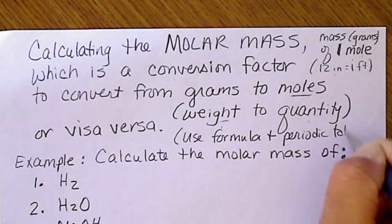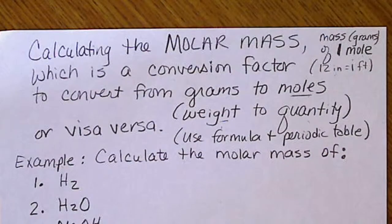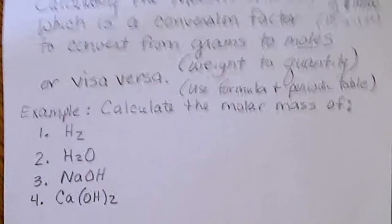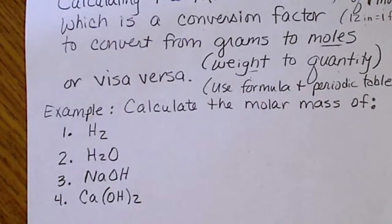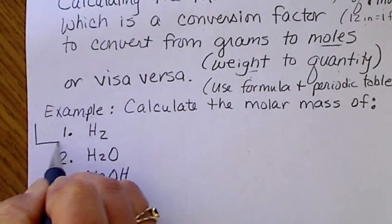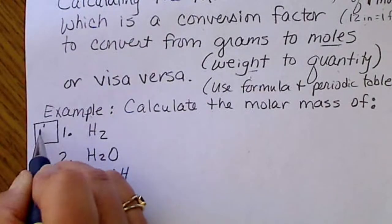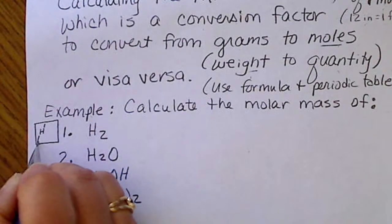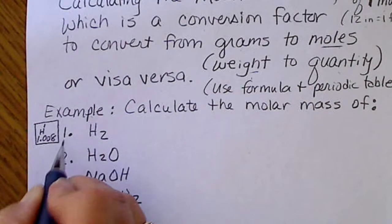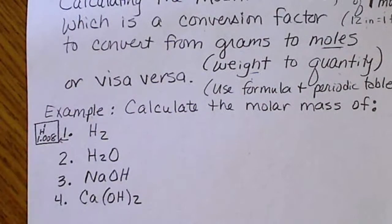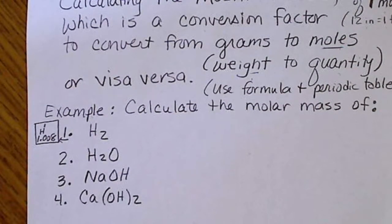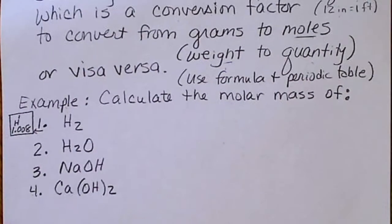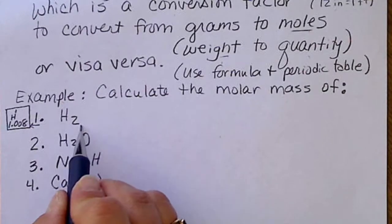We'll see the mass of each atom written on the symbol for the periodic table. That mass number that we're going to be looking at, the number written below the symbol, is what we're going to be looking at. This is the element hydrogen.